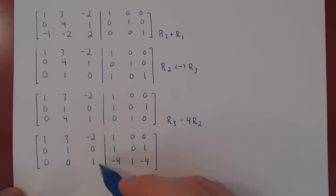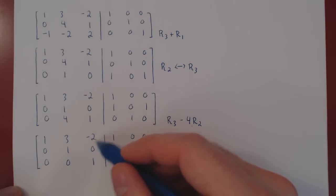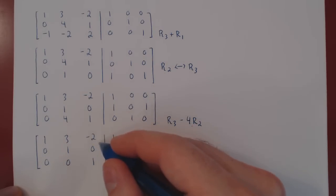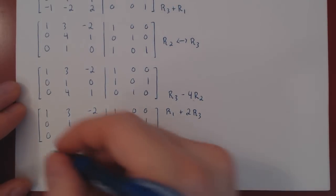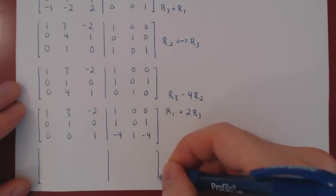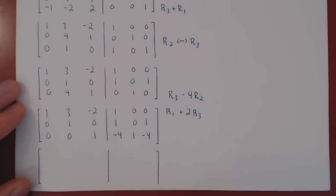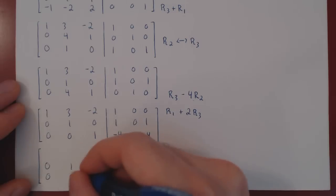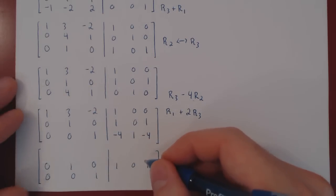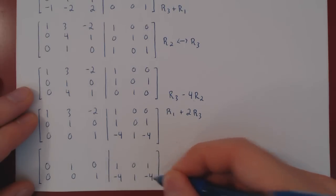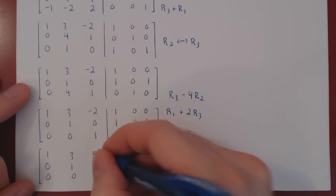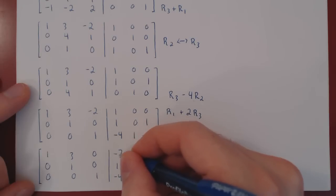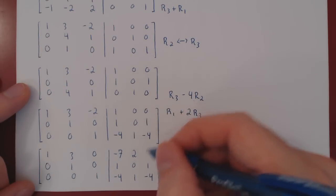We have introduced the three leading 1's. Everything below is zero, so we now need to eliminate the entries above to get the reduced row echelon form. Let's kill the -2: row 1 plus 2 times row 3. We are only changing the first row, so we recopy the second and third rows. Applying: 1+0=1, 3+0=3, -2+2=0, 1+(-8)=-7, 0+2=2, 0+(-8)=-8.